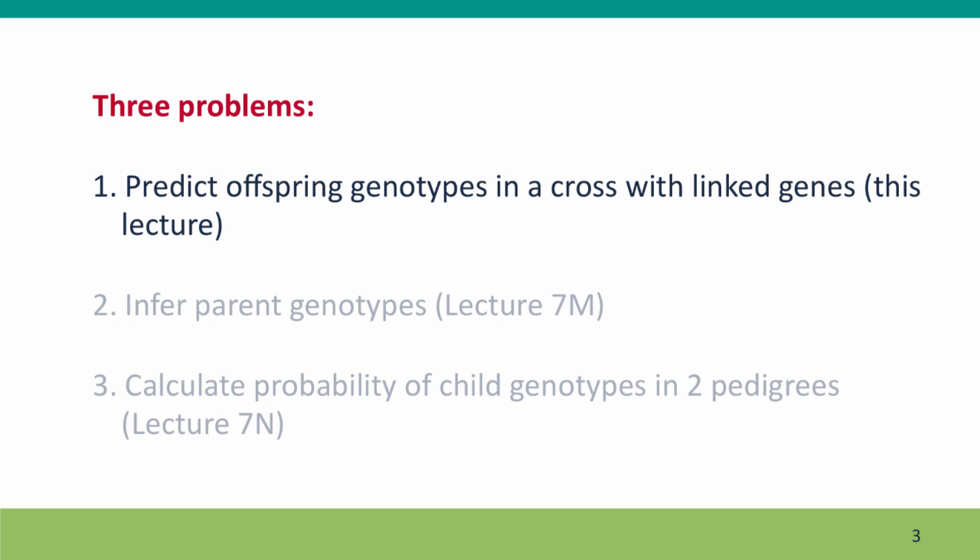In the upcoming lectures, we'll work on thinking backwards from the genotypes of the offspring to the genotypes of the parents, and we'll do the first of a number of problems where we're going to consider events in a single family, and we'll use pedigree drawings to guide our thinking.